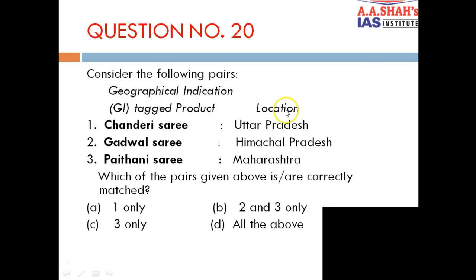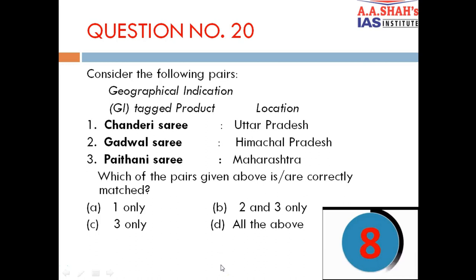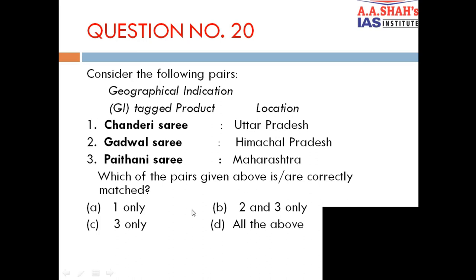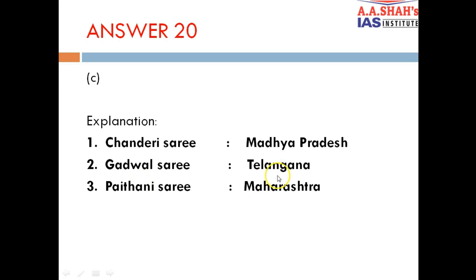Question 20: Consider the following pairs — GI tagged product and location. 1. Chanderi Sari, Uttar Pradesh. 2. Gadwal Sari, Himachal Pradesh. 3. Paithani Sari, Maharashtra. The correct answer is C — third only. Paithani Sari is correctly from Maharashtra. Chanderi Sari is from Madhya Pradesh, not Uttar Pradesh. And Gadwal Sari is not from Himachal Pradesh — it is from Telangana. Note: Gadwal in the Himalayas is a different place; Gadwal Sari is from Telangana.